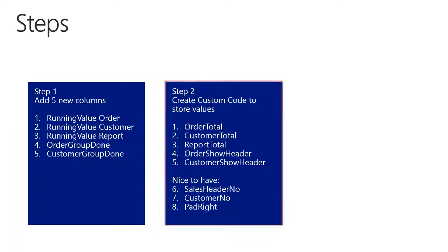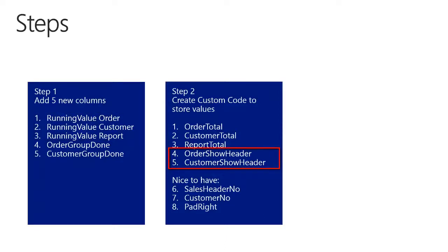I will create custom code to store order total, customer total, and report total. These three are based on the first three columns with running values, which we created in step number one. Then I will create custom code to store the order show header and the customer show header. These are based on the last columns, which contain information on whether the group was completed or not. And at last, I have created custom code to store the values of the sales header number and the customer number, so I can show them in the TransFooter and the TransHeader text boxes.